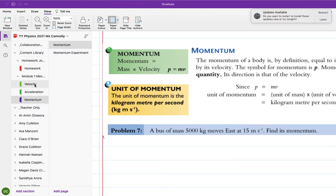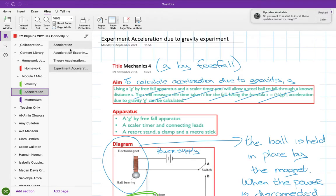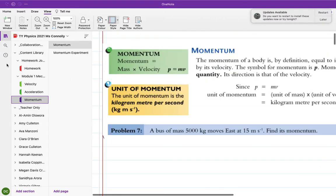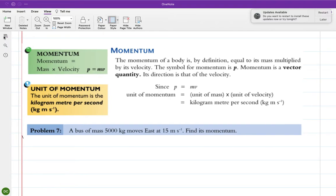We've done velocity and we did the experiment. We did acceleration, horizontal acceleration, and then we did an experiment on horizontal acceleration. Then we did acceleration due to gravity in the vertical plane and then we did the experiment on that. So the next experiment we're going to do is momentum.